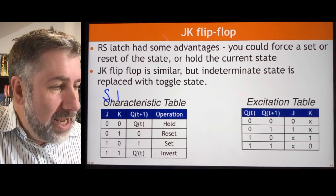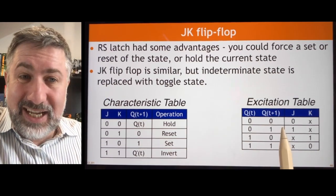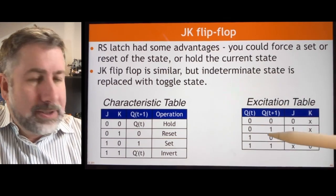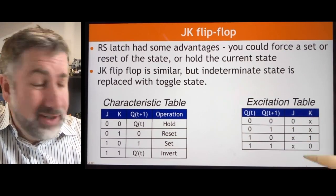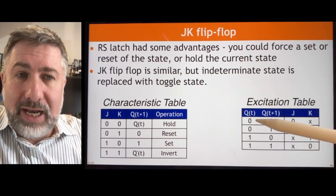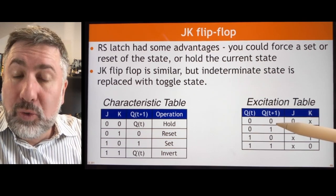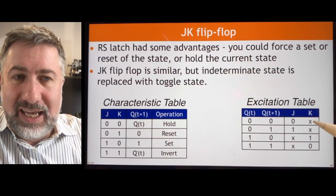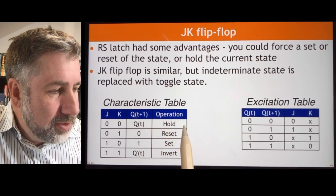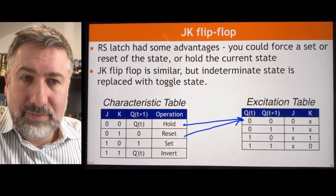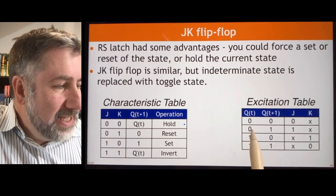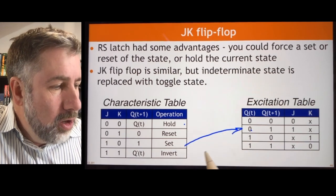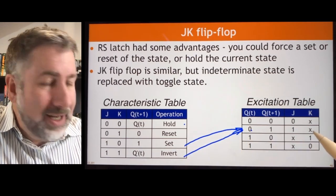The characteristic table for our JK flip-flop leads to an excitation table — which tells you what inputs to use to drive the machine to do what you want. There are don't cares everywhere, which is pretty useful. If I'm in state 0 and I want to move to state 0, I can either hold or reset — J is 0 and K doesn't matter. If I'm in state 0 and I want to go to state 1, I can either set or invert — J is 1 and K doesn't matter.